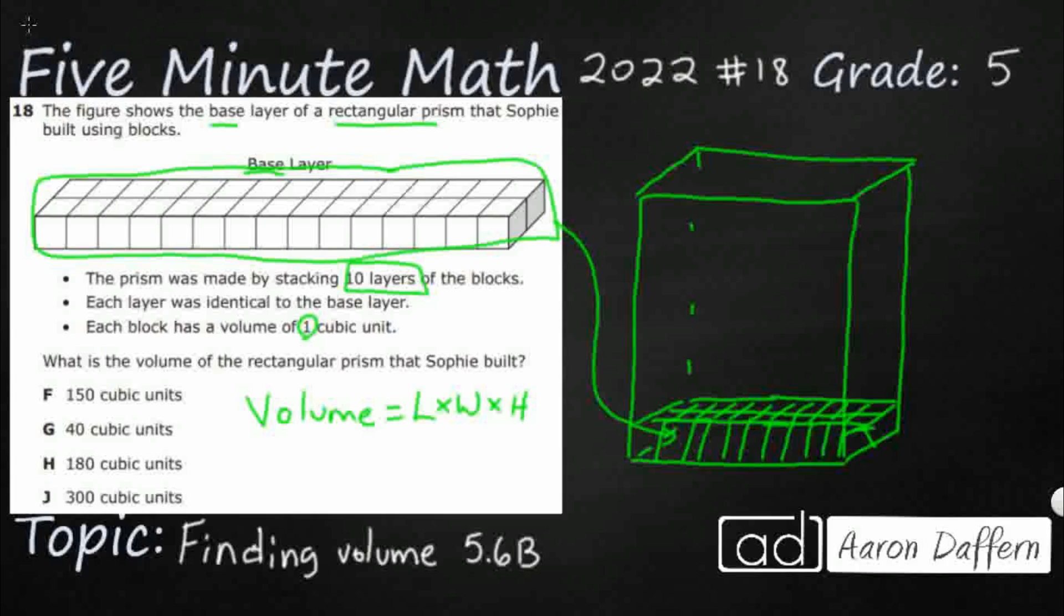But as we get older, it really transitions into base times height. They tend to use lowercase letters, right? This h is still the height. This base is the area of the base. And we know we can find an area of a rectangular prism by length times width.